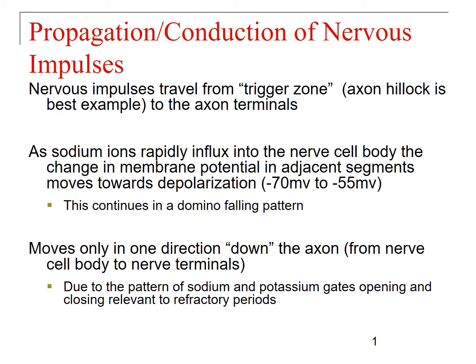As sodium ions come into the nerve cell body, you're going to get a change in membrane potential in the spots next to it, moving towards depolarization — from your resting potential of negative 70 up to your threshold at negative 55. This continues in a domino-falling pattern in one direction down the axon, from the nerve cell body down to the nerve terminals, because of the pattern of sodium and potassium channels opening and closing.